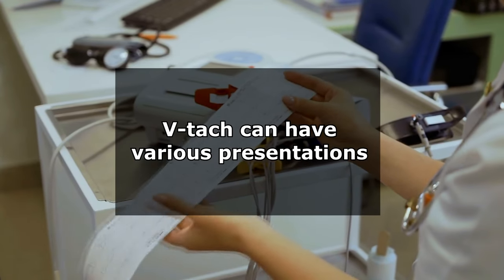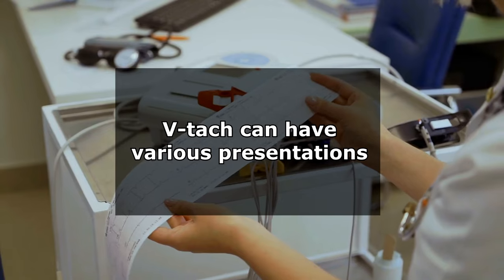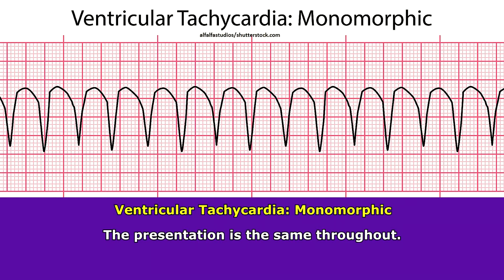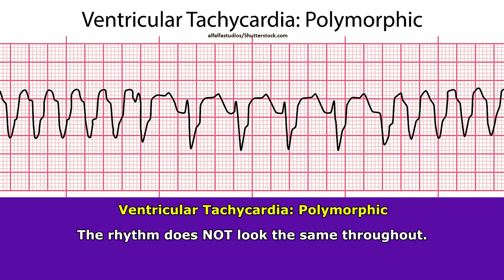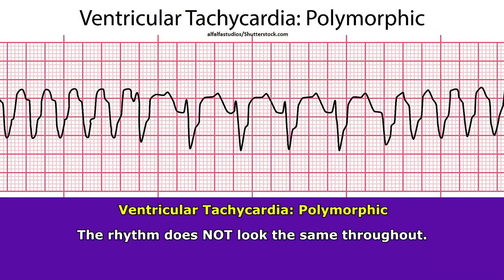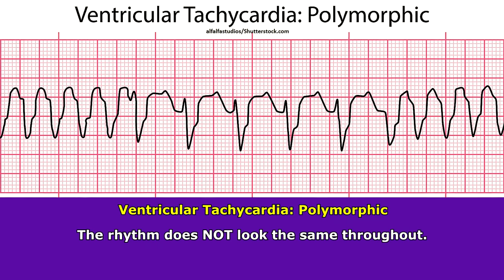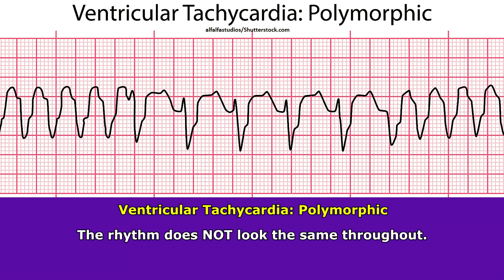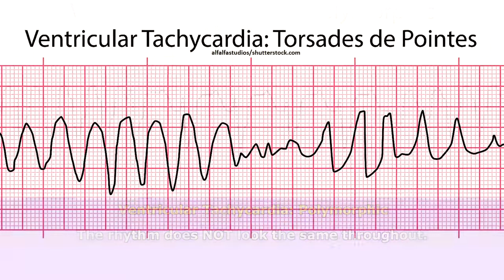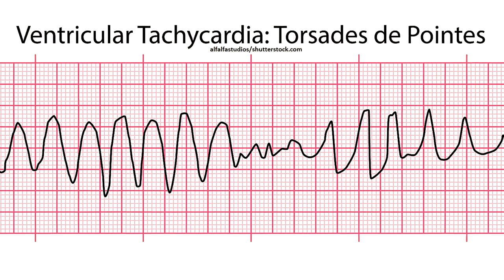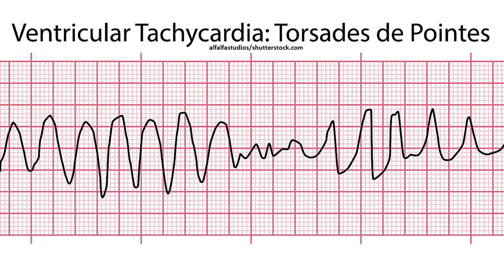A couple of things you want to remember about VTAC is that it can have various presentations. VTAC can appear monomorphic — referred to as monomorphic VTAC — where its presentation is the same throughout. Or it can appear as polymorphic VTAC, where the rhythm does not look the same throughout. One type of polymorphic VTAC is called torsades de pointes. You want to be aware of these different presentations because treatment is slightly different for each.